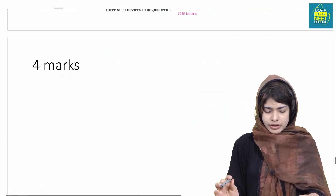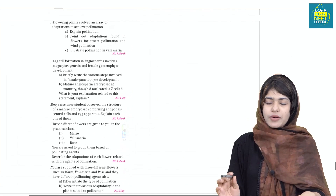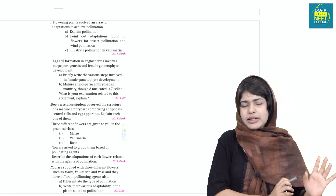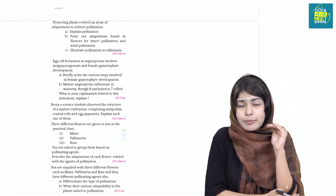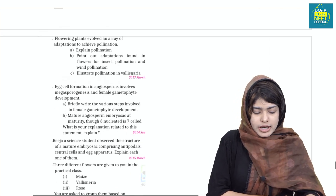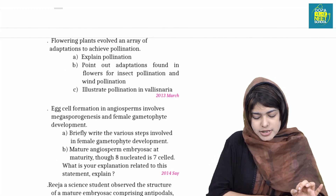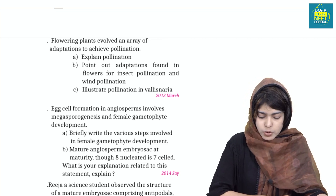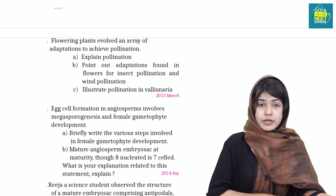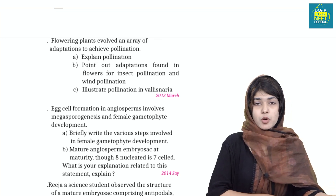We have four more and five more questions. We will discuss these in chapter 3. Flowering plants evolved many adaptations to achieve pollination. What is pollination? What are the adaptations of insect pollination? What is wind pollination?